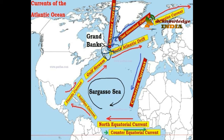The Gulf Stream then deflects eastward under the combined influence of the westerlies and the rotation of the Earth, and crosses the Atlantic Ocean as the warm North Atlantic Drift. In this journey, another cold current from the Arctic called the East Greenland Current joins with the North Atlantic Drift.